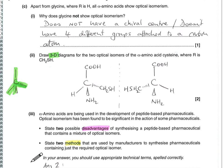Part C starts talking about alpha-amino acids and optical isomerism. Glycine is the simplest alpha-amino acid, where the R group is a hydrogen. Why does glycine not show optical isomerism? That's because it does not have a chiral centre — it has two hydrogens attached to the alpha-carbon, so it can't exhibit optical isomerism.